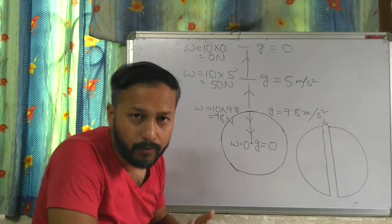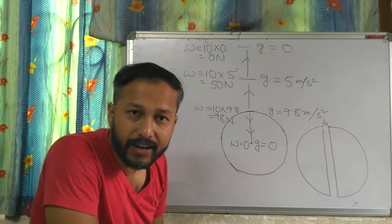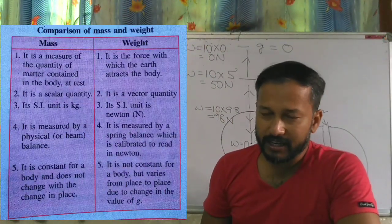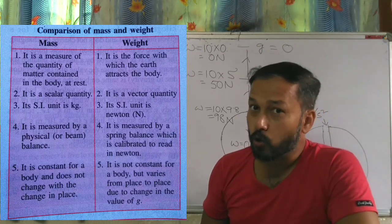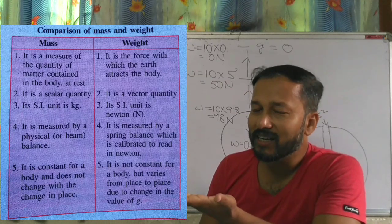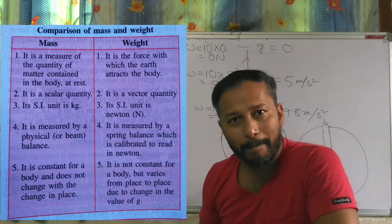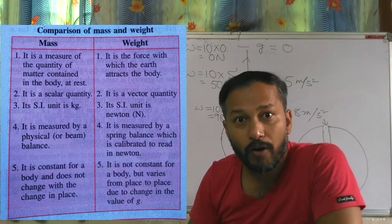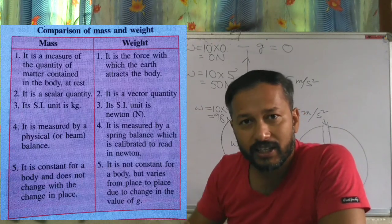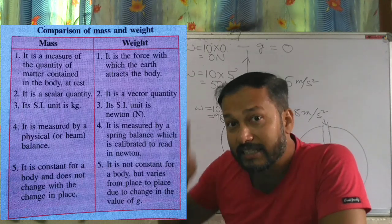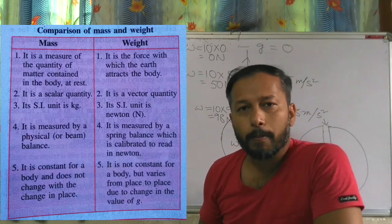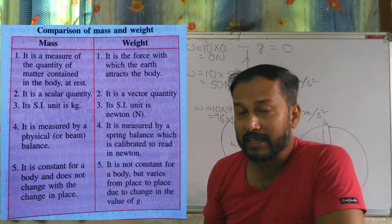Now we will discuss the differences between mass and weight in column form. First difference: mass is the measure of the quantity of matter — for example, the book is made of paper, and how much paper is there is its mass. Weight is the amount of force by which the Earth — or any planet or satellite you are standing on — attracts you. That force is your weight.